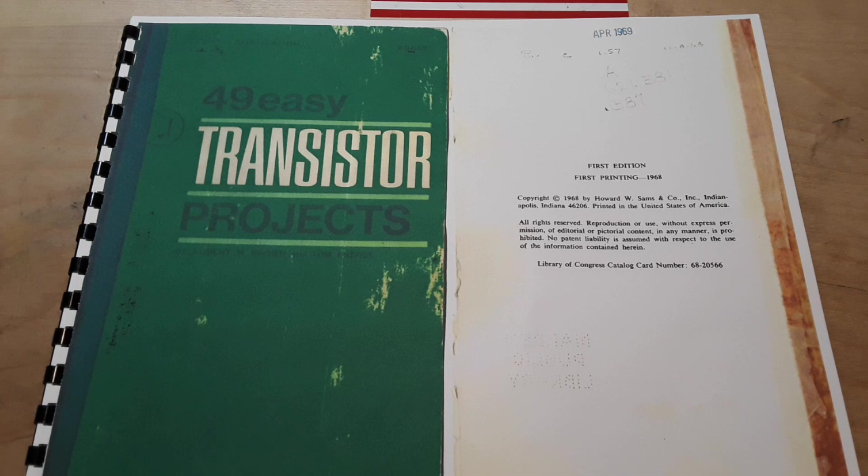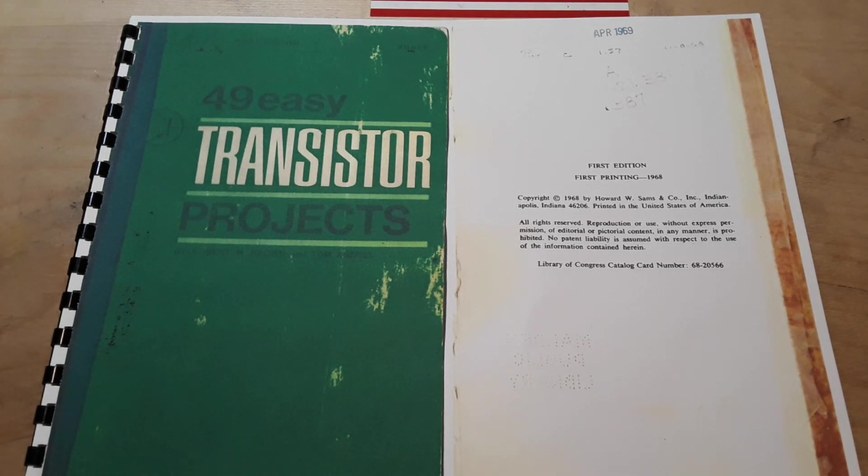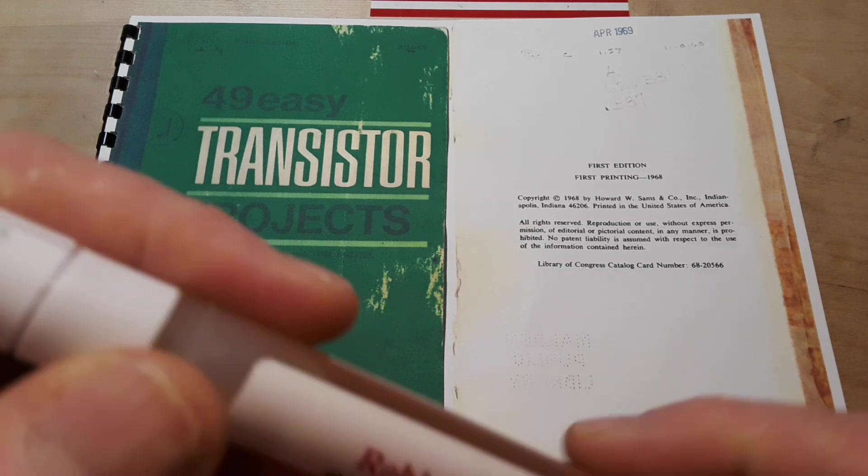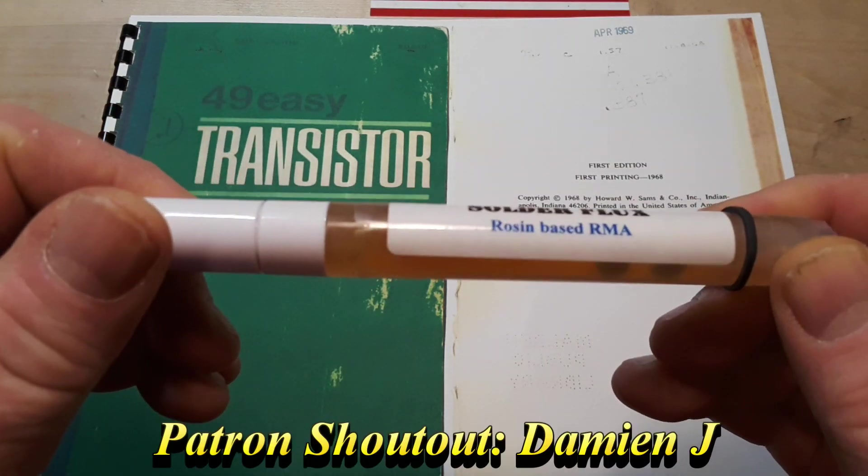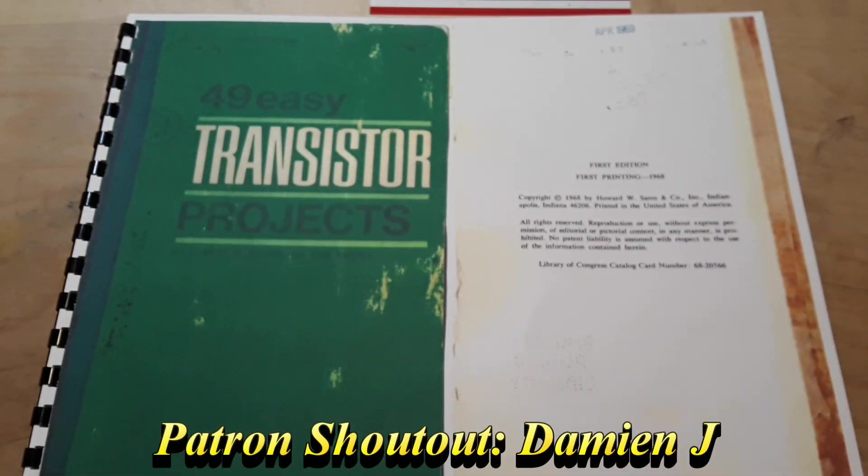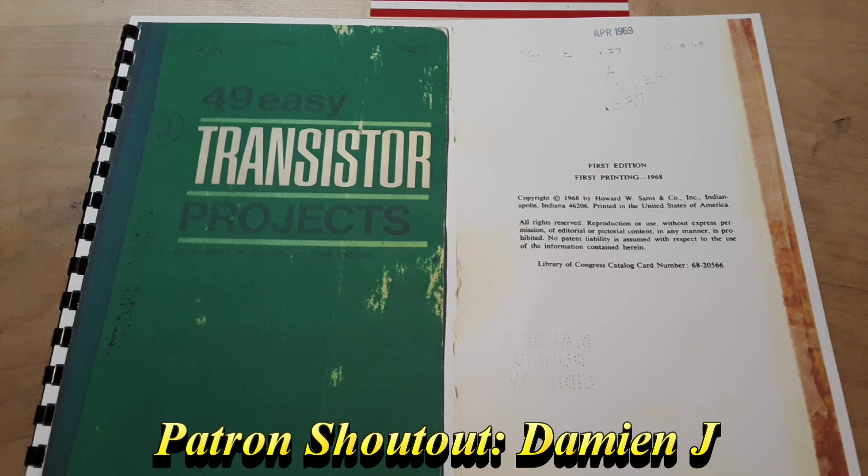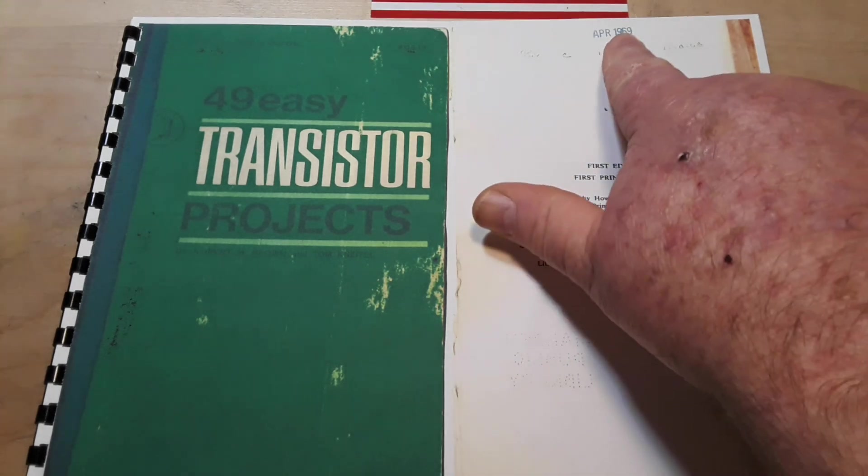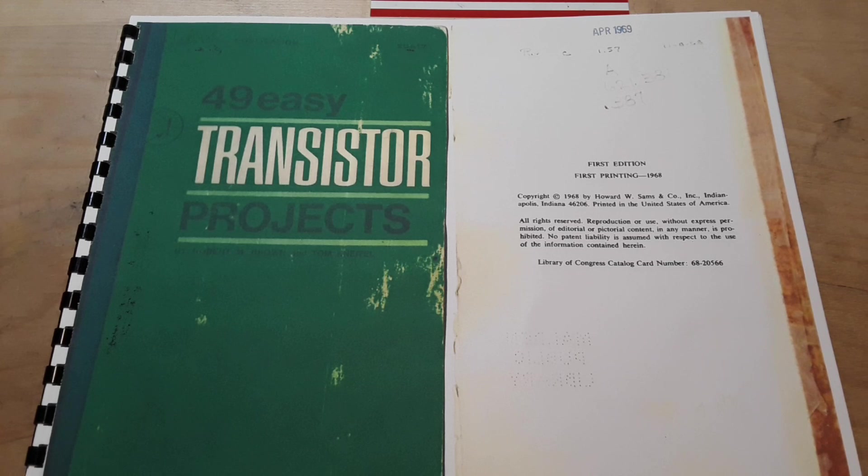So what we're going to do today is take a quick look at this book. It was sent in by a great friend of the channel, Uncle Rob. He was famous for Rob's original solder flux. This book is 1969, 1968, right about the time I was born. It's vintage Paul.